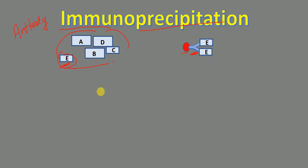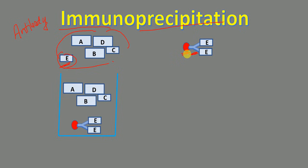The antibody will bind to protein E but will not bind to any other proteins present in the mixture. We then incubate the cell lysate — the mixture containing all proteins — with our antibody attached to the magnetic beads. Because the antibody is specific for protein E, it will bind only to protein E.